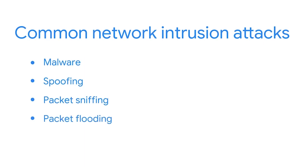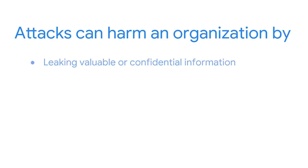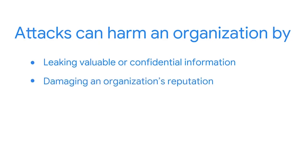Network operations can also be disrupted by attacks such as packet flooding. Protecting a network from these types of attacks is important. If even one of them happens, it could have a catastrophic impact on an organization. Attacks can harm an organization by leaking valuable or confidential information, and they can be damaging to an organization's reputation and impact customer retention.